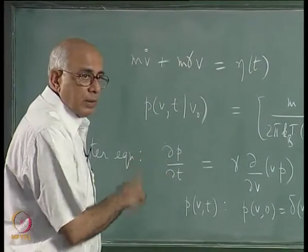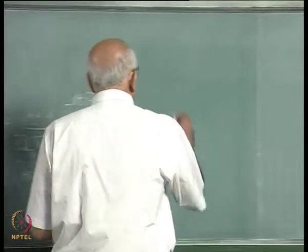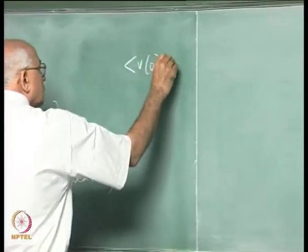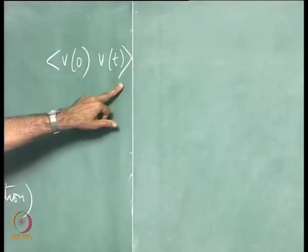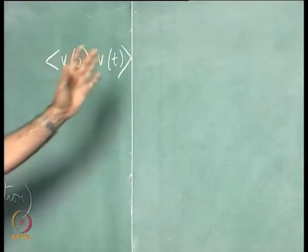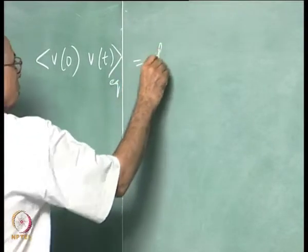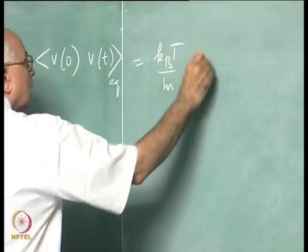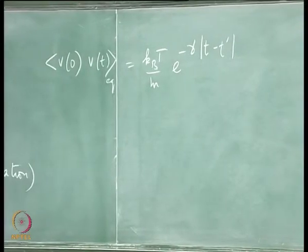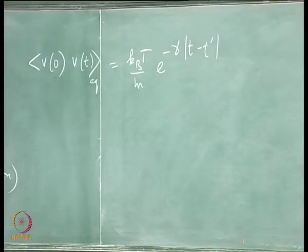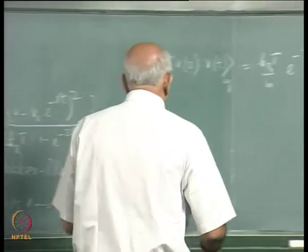We also found from this that the velocity was correlated exponentially. The velocity correlation ⟨V(t₁)V(t₂)⟩ is a function only of |t₁ – t₂|, and shifting the origin to call one argument 0, in equilibrium this turns out to be (k_B T / m) · e^{–γ|t₂|}.